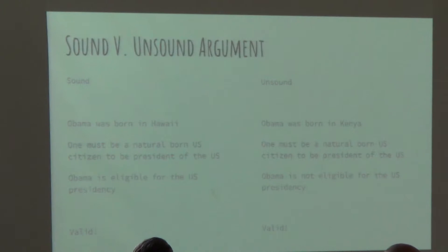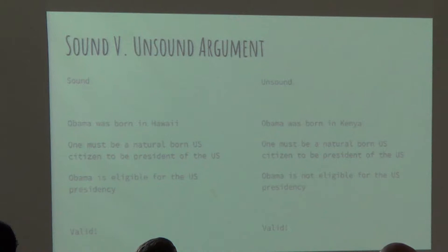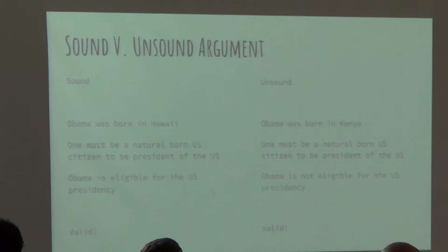Both of these arguments are valid, but one is sound and one is unsound. A sound example: Obama was born in Hawaii; one must be a natural-born U.S. citizen to be president (Article Two, Section One, for anyone curious); therefore Obama is eligible for the U.S. presidency. That is both sound and valid. An unsound example: Obama was born in Kenya; one must be a natural-born U.S. citizen to be president; therefore Obama is not eligible. That is a valid structure but an unsound argument, because the premise isn't true.